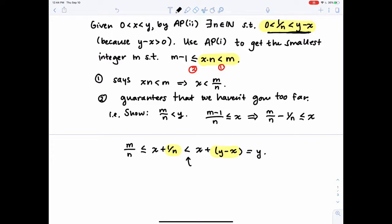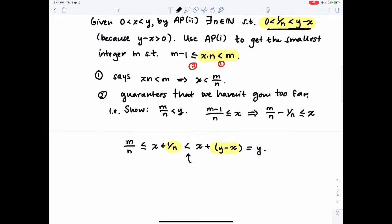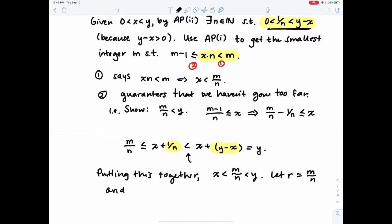So putting this together, x is less than m over n, which is less than y. Let r equal m over n. That's an r. And note that r is in Q by construction. n was a natural number, so we know it's an integer that's not zero. And m was chosen to be an integer. So that is the proof.